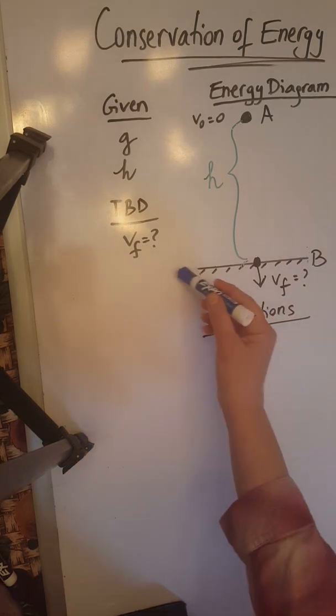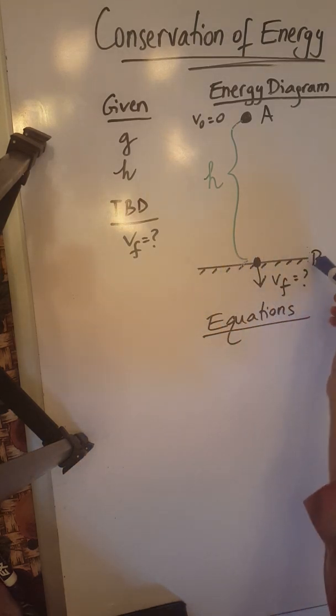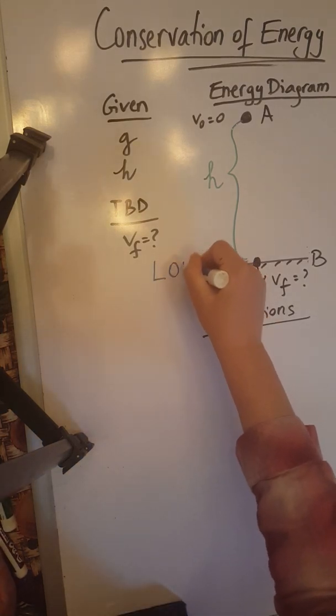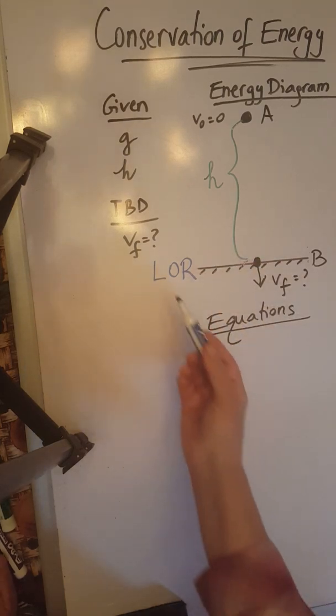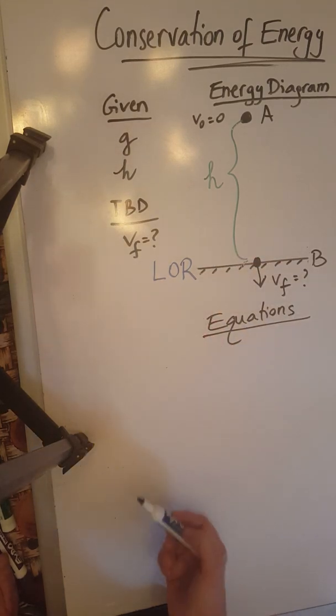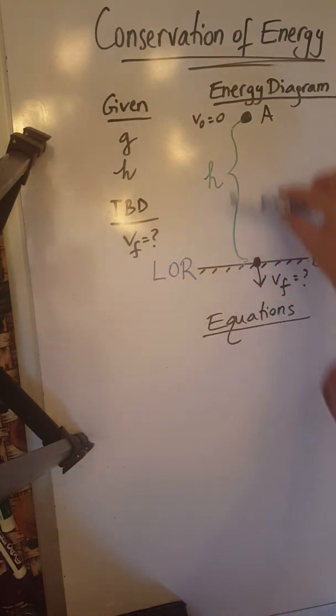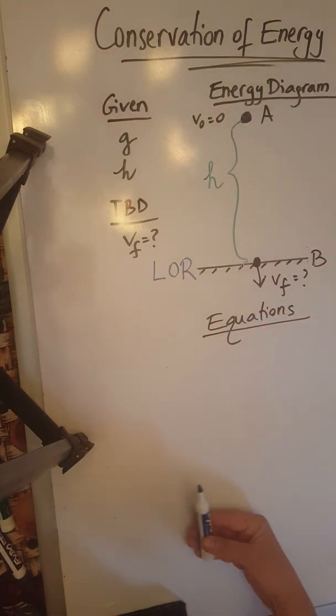So I am going to pick for the level of reference the ground and I'm going to write over here next to it LOR, which is the symbol for the level of reference. That means any point above the ground will have potential energy.